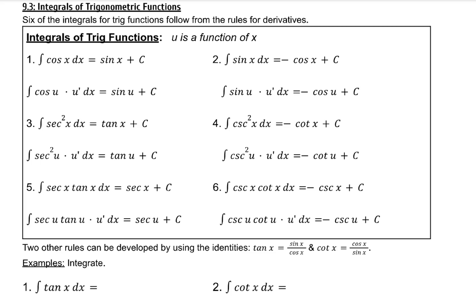Six of the integrals for trig functions can be seen below. U is a function of x. Two other rules can be developed by using the identities: tangent of x equals sine x over cosine x, and cotangent of x equals cosine x over sine x.